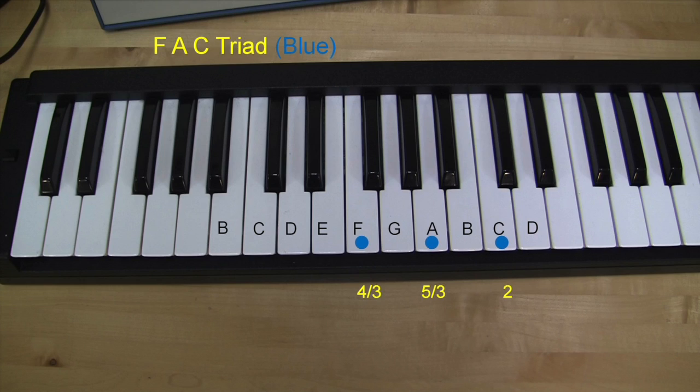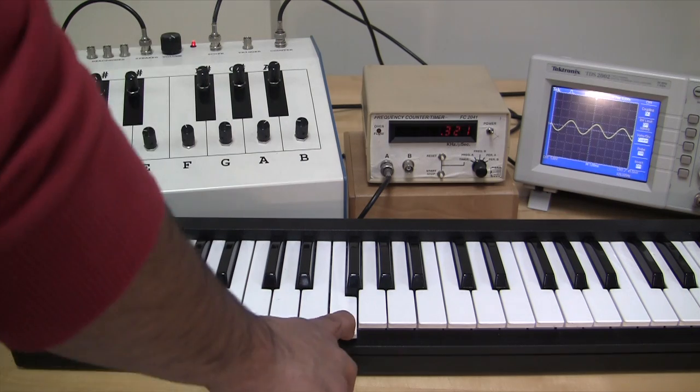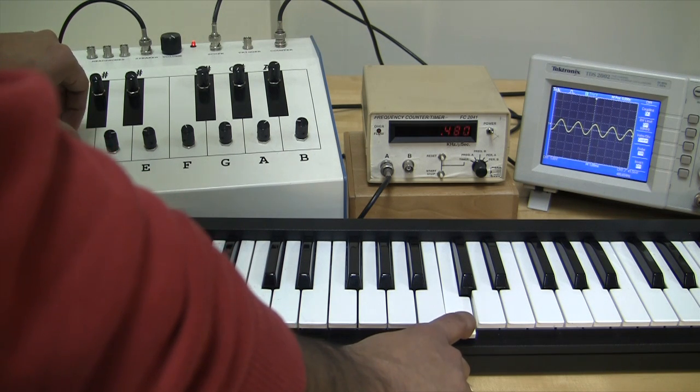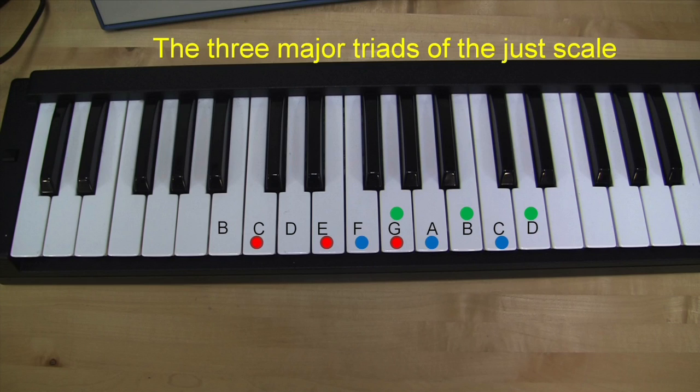Finally, make a third triad which ends on upper C, that is F, A, upper C with the same ratio of 4x5x6. You have now obtained a just scale.